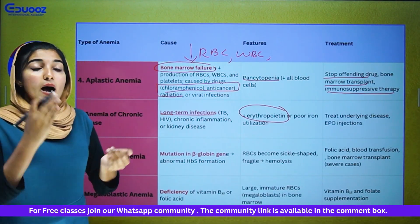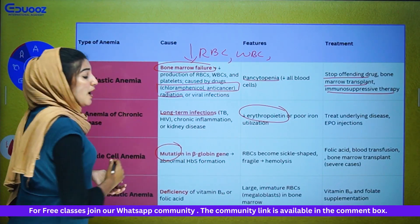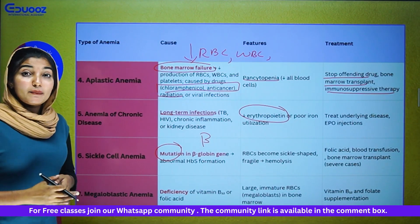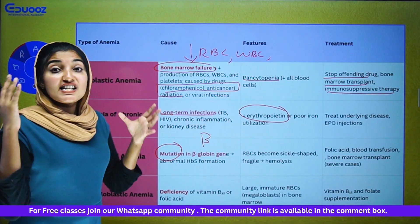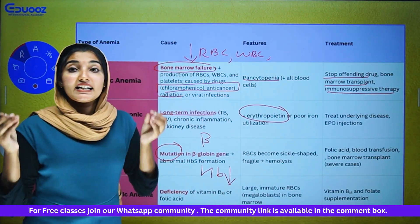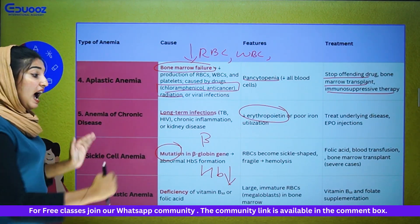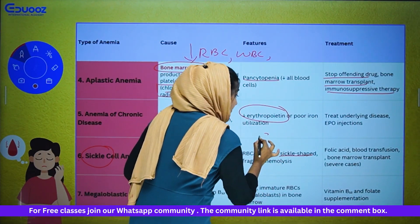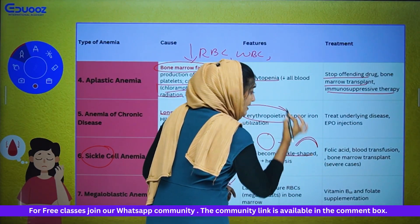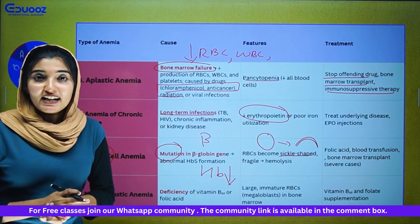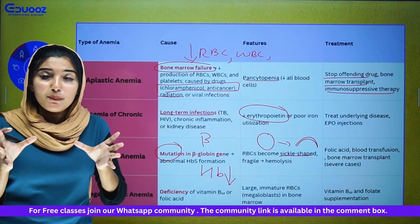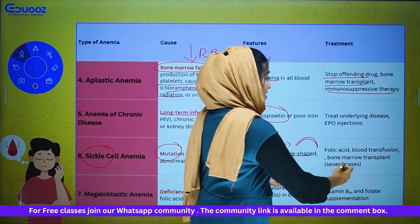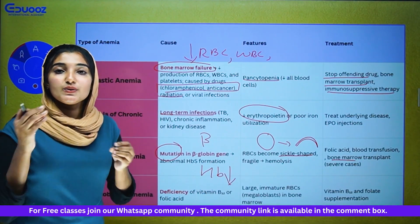Sickle cell anemia is a genetic defect — a mutation in the beta chain of hemoglobin. In sickle cell anemia, the hemoglobin formation decreases. The feature is that RBC becomes sickle shaped — abnormal, fragile — leading to hemolysis. Treatment includes folic acid, blood transfusion, and bone marrow transplantation in severe cases.